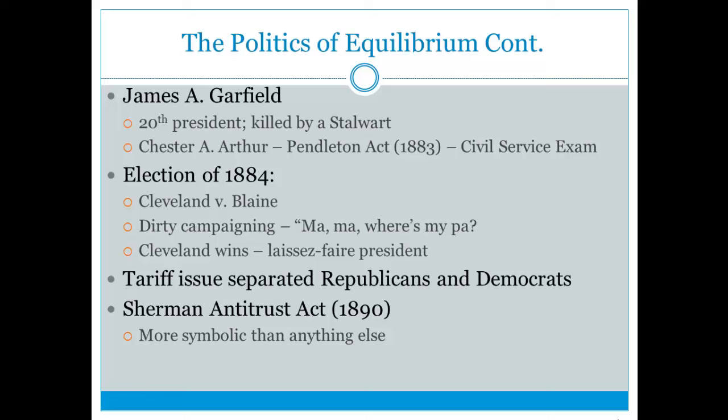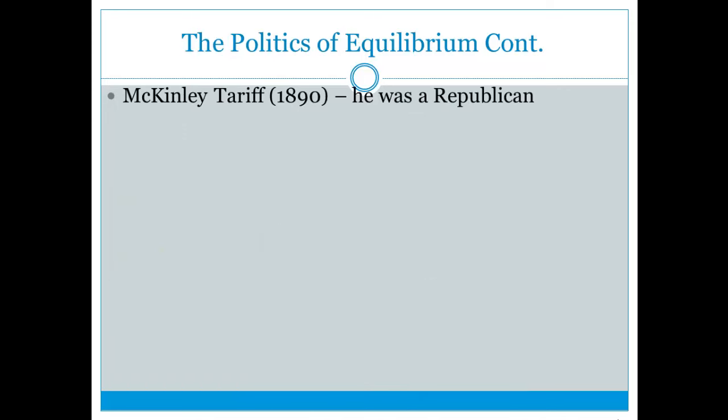In 1890, the Sherman Antitrust Act was passed to break up monopolies, but in actuality — and you need to know this — it was used to break up unions. Lawyers argued that unions were a restraint to trade under the act's language. Definitely know that it was used to break up unions.